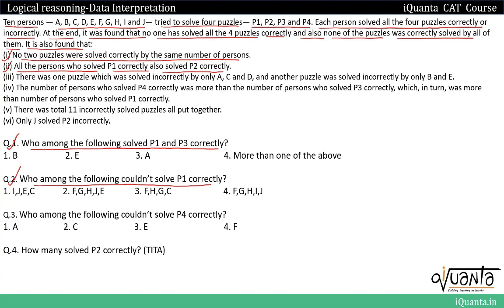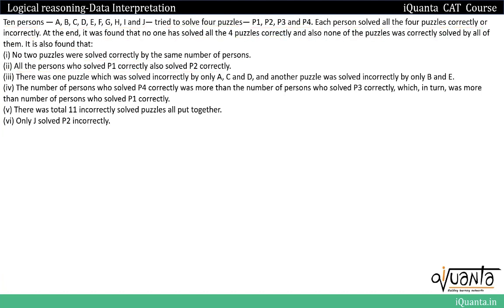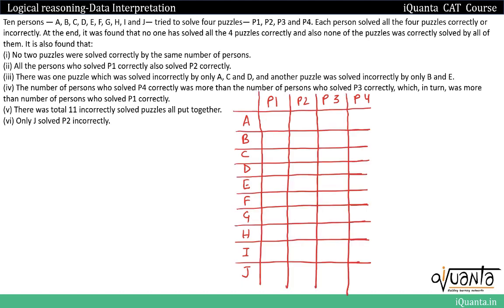Let's go to the next slide. We'll relate puzzles and people, writing P1, P2, P3, P4 along the rows and A, B, C, D, E, F, G, H, I, J along the columns. Whenever a person answers a puzzle correctly, we'll put a tick; if incorrectly, we'll put a cross.